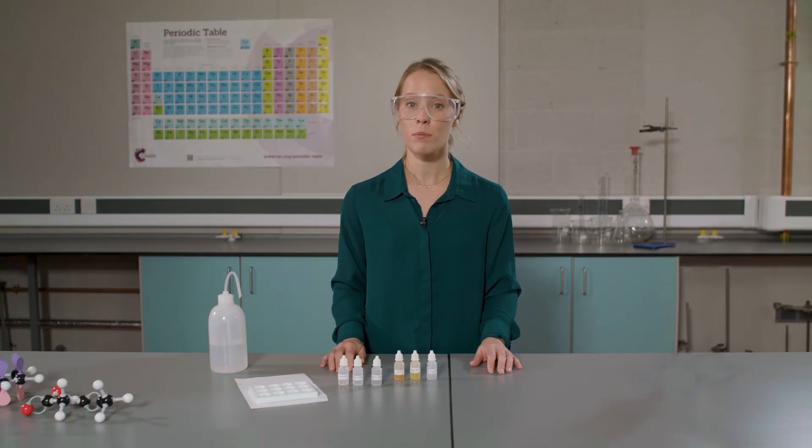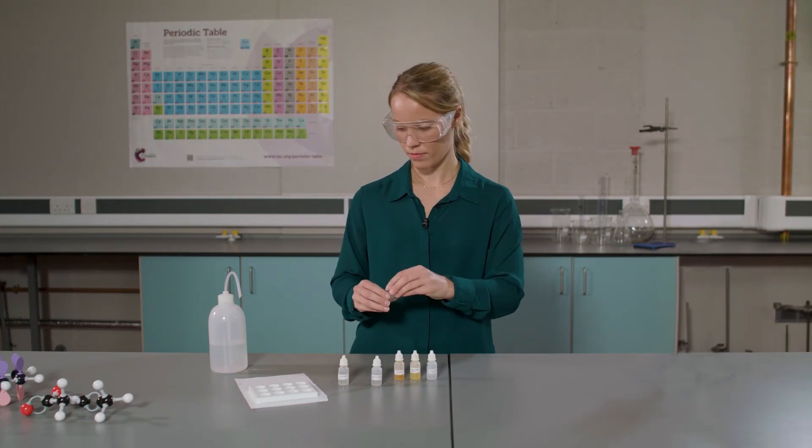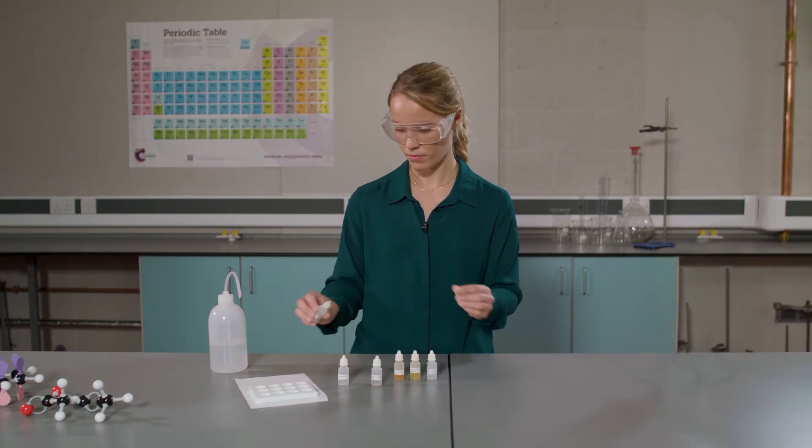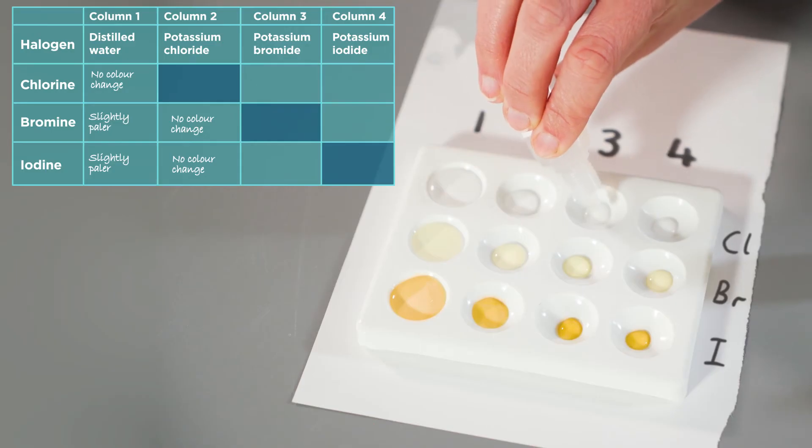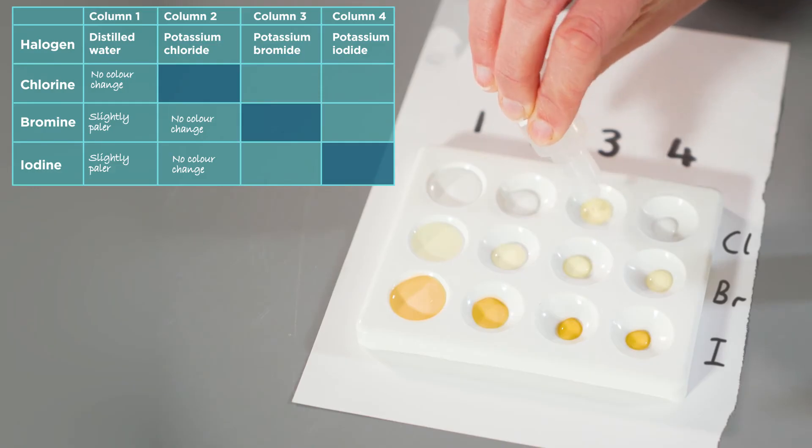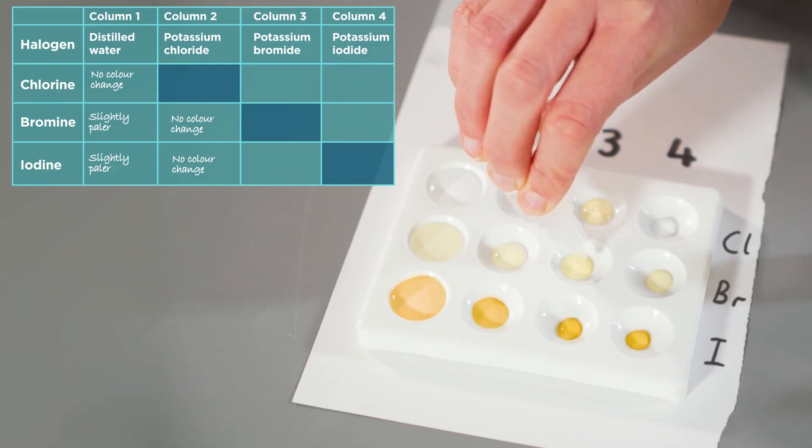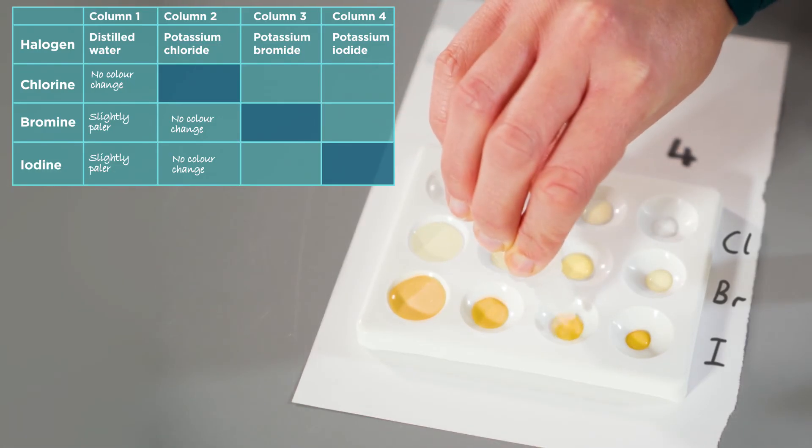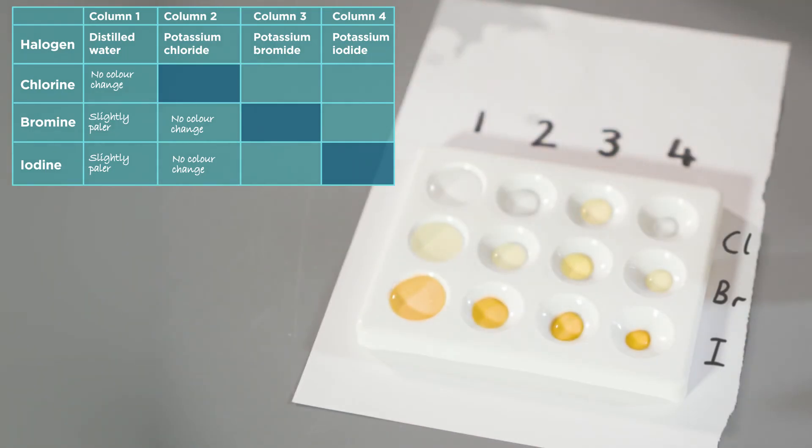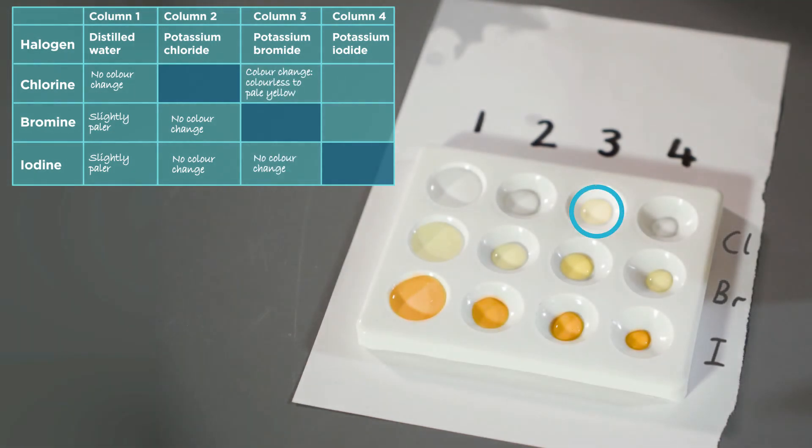I will now add potassium bromide to the third column. Carefully observe and note down any changes. Here we observe that when potassium bromide is added to chlorine water, a reaction has taken place.